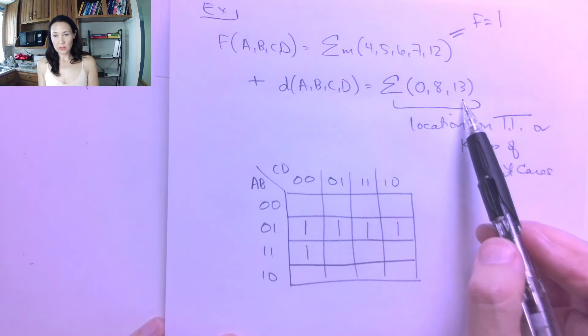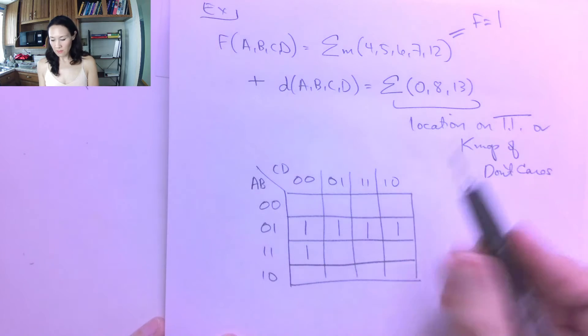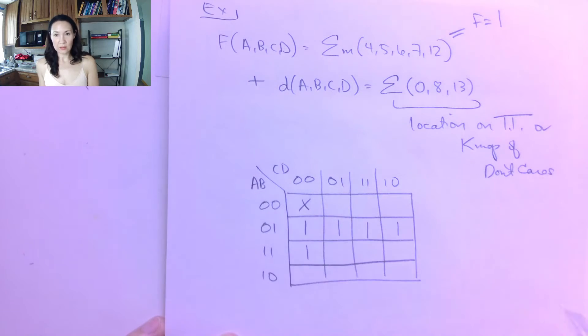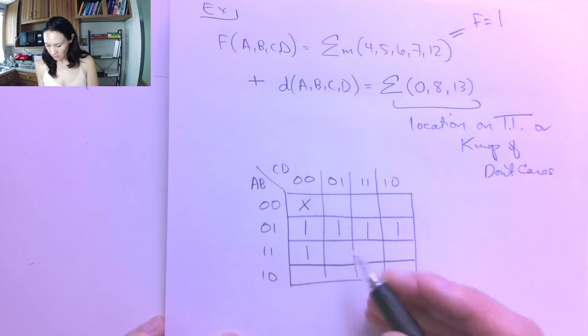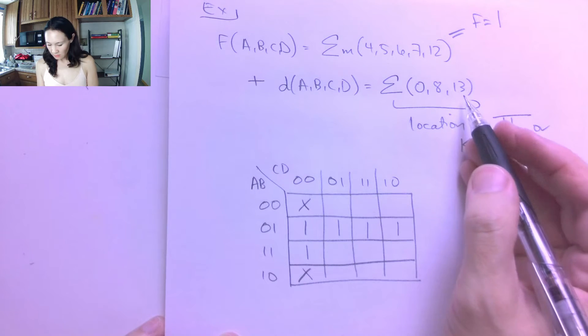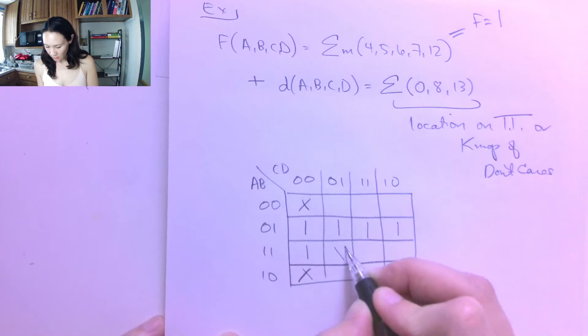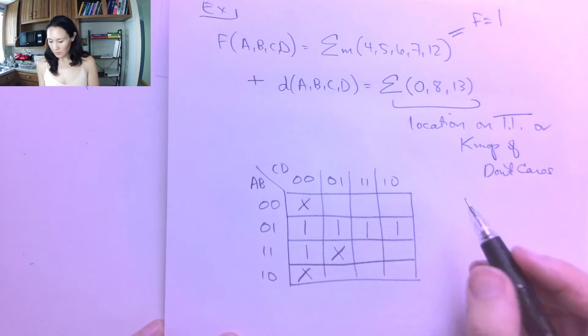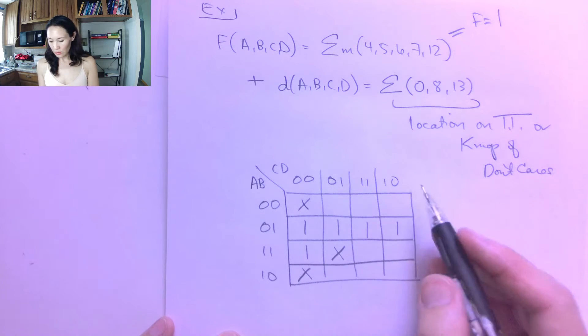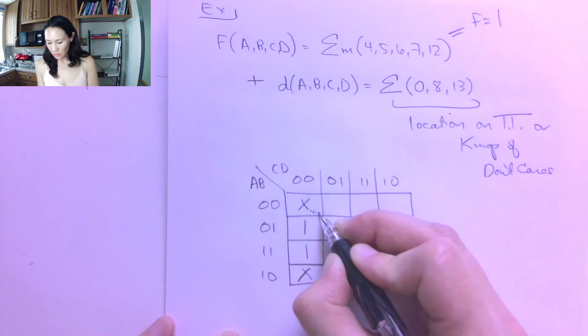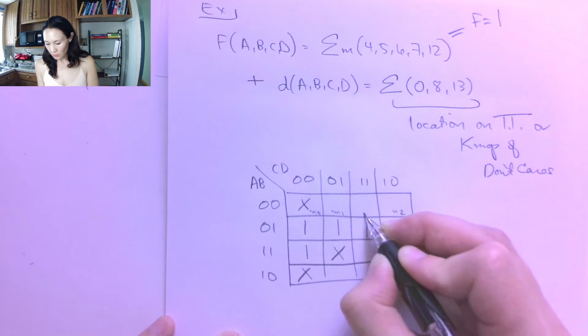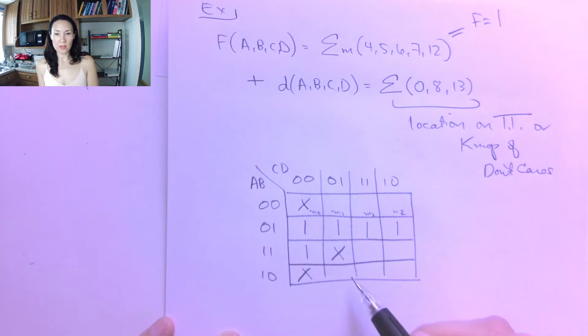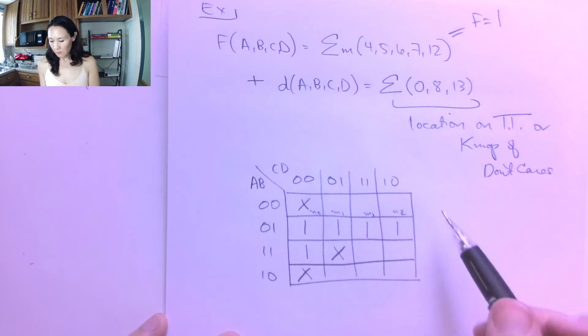And these are the locations of my don't cares. So the 0 minterm, that's a don't care, so I put an X. And 8 is, let's see, here. And 13 is here. So you can look, if you need a refresher, at the previous videos for which minterms go where, minterm 0, minterm 1, minterm 2, minterm 3, and so on, to know where these locations are.